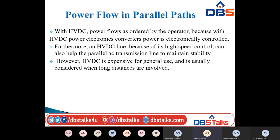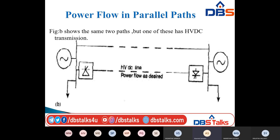HVDC is expensive for general use. It is used when long distances are involved — to transfer power generation over long distances. For short distances, only parallel AC paths are used. By using an HVDC line, power can be transferred as directed by the operator.